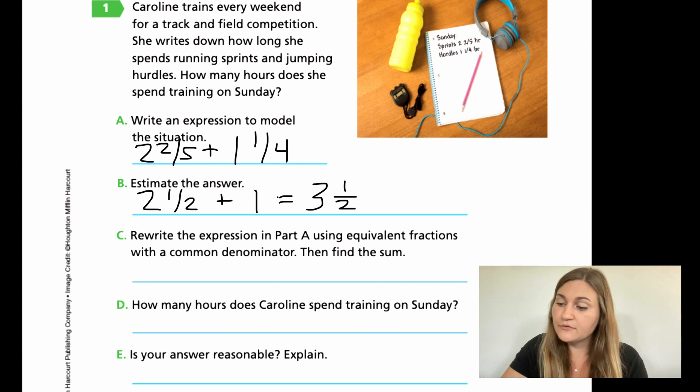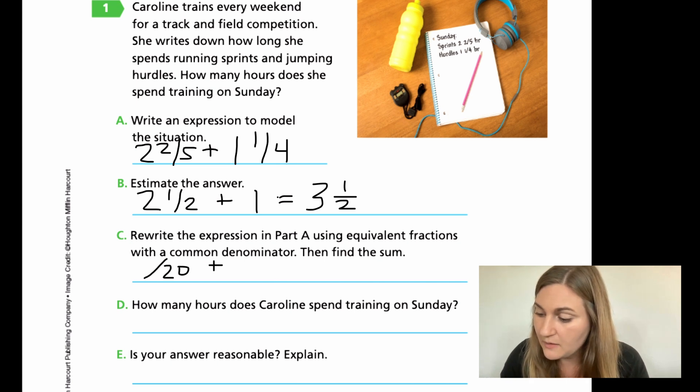For C, now we're going to rewrite the expression in part A using equivalent fractions with a common denominator. Then we're going to find the sum. My two denominators right now are 5 and 4. So I need to be able to multiply both numbers to be the same number. I know that those numbers are going to be actually multiplying against each other to give me 20. I'm going to start with my expression.